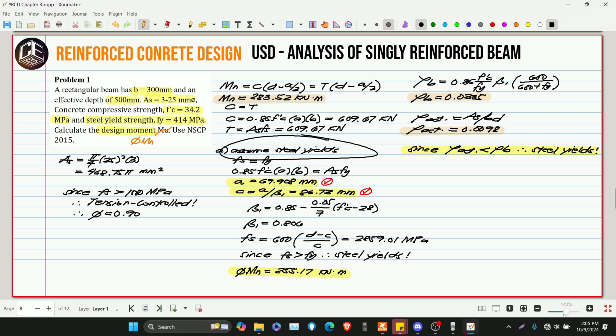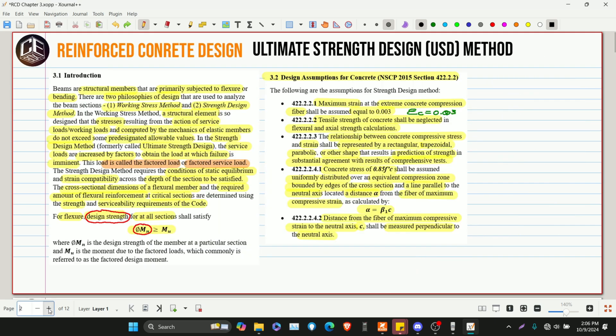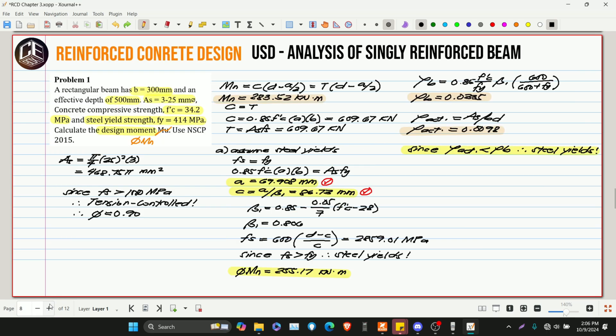Kaya kahit hindi ka na mag-undergo dito sa assumption, kung alam mo ang equation ng row balance, tapos alam mo kung paano kunin yung row actual, alam mo na agad na mag-yield yung bakal. Kahit hindi ka na mag-punta-punta dito sa assumption, hindi mo na kailangan pang patunayan yung FS na mag-greater than sa FY. Kasi based on our row balance at row actual, talagang mag-yield yung bakal. So, napakasimple lang pala talaga ng pag-analyze ng singly rectangular reinforced beam. Pero, nung first time ko na mag-solve ng mga problems under sa reinforced concrete design, sa analysis of singly reinforced beam under USD, talagang hirap na hirap ako. Pero, simple lang naman talaga yung pag-analyze dito. As long as talagang naunawaan ninyo at sinundan ninyo itong discussion natin sa introduction, hindi kayo gaano maihirapan sa pag-analyze ng singly reinforced beam. So, this is our problem number one for reinforced concrete design, USD, analysis of singly reinforced beam.